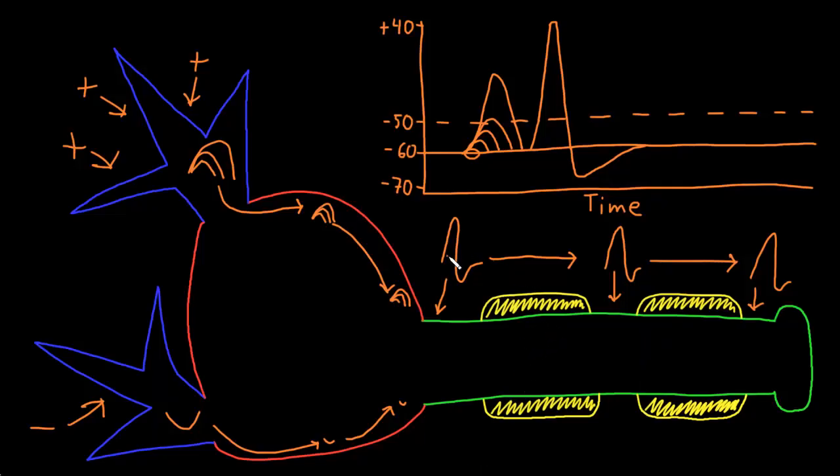With myelinated axons, the speed an action potential is conducted down the axon is not consistent. We actually see that the action potential is conducted faster through the myelinated segments than through the gaps between the myelinated segments called the nodes of Ranvier. So that if we look here at the trigger zone, the action potential travels a little slower through there and then much more quickly through this myelinated segment. And then it travels a little more slowly through that node of Ranvier, then much faster through this next myelinated segment. This phenomenon is called saltatory conduction, saltatory. And this word saltatory comes from a Latin word for jumping because the action potential appears to jump from node to node instead of having a nice smooth conduction along the axon.